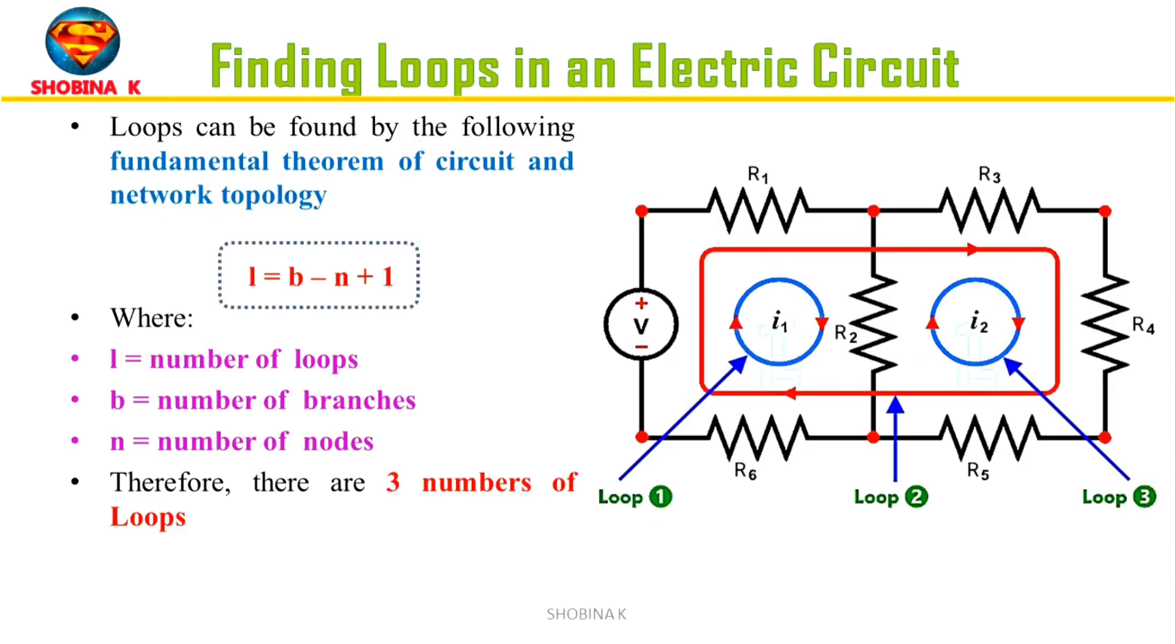And the loops can be found by the following fundamental theorem of circuit and network topology: l = b - n + 1, where l is the number of loops, b is number of branches, and n is number of nodes. In this figure, there are three number of loops.